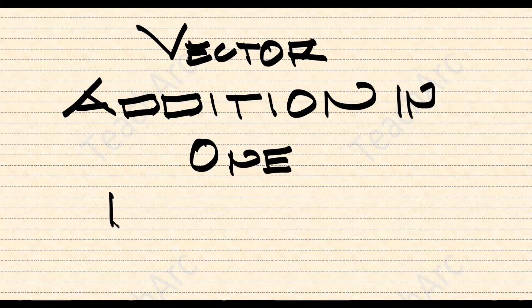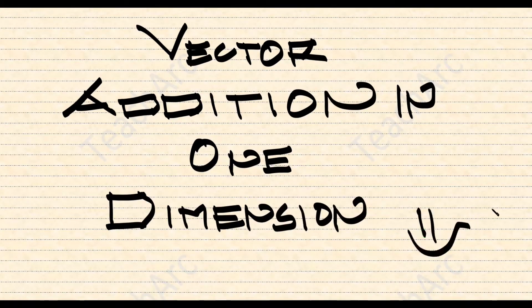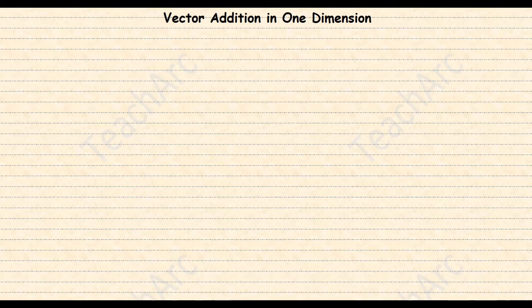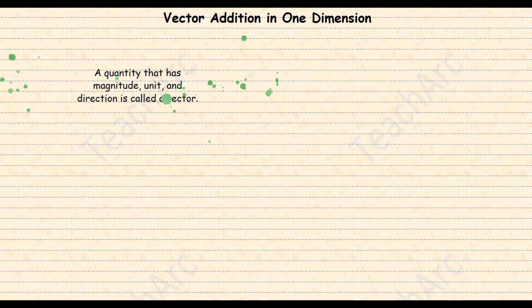Vector Addition in One Dimension. A quantity that has a magnitude, unit, and direction is called a vector quantity.